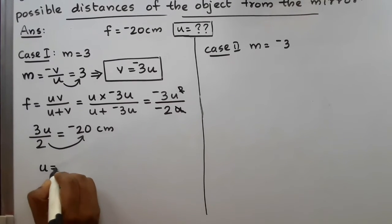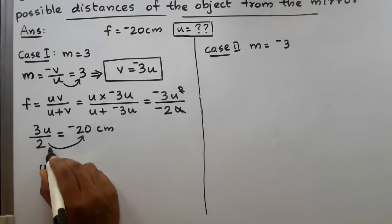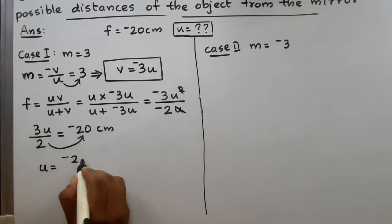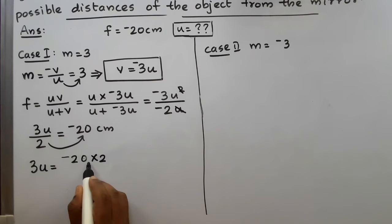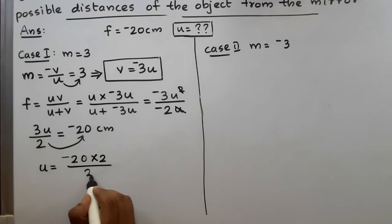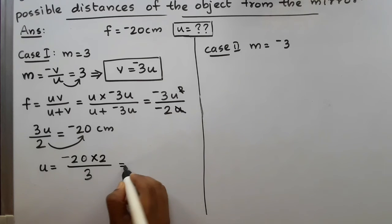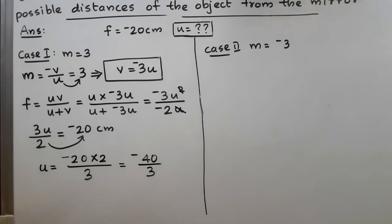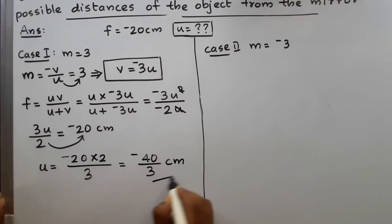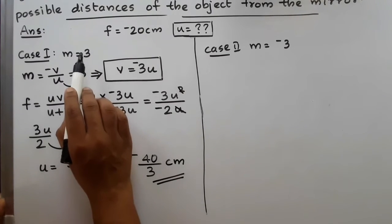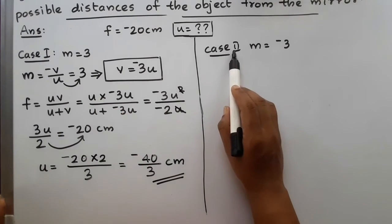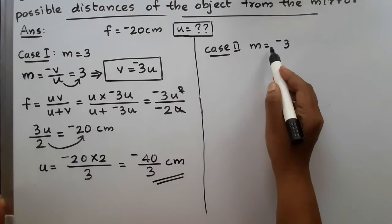From 3U/2 = minus 20: 3U = minus 40, so U = minus 40/3 centimeters. That is the object distance in Case 1 when the image is erect and virtual. For Case 2, M = minus 3. Using M = -v/u = minus 3: minus V = minus 3U, so V = 3U.